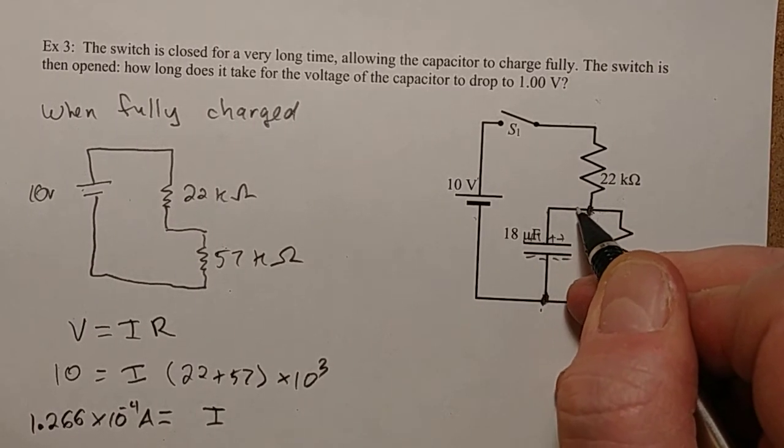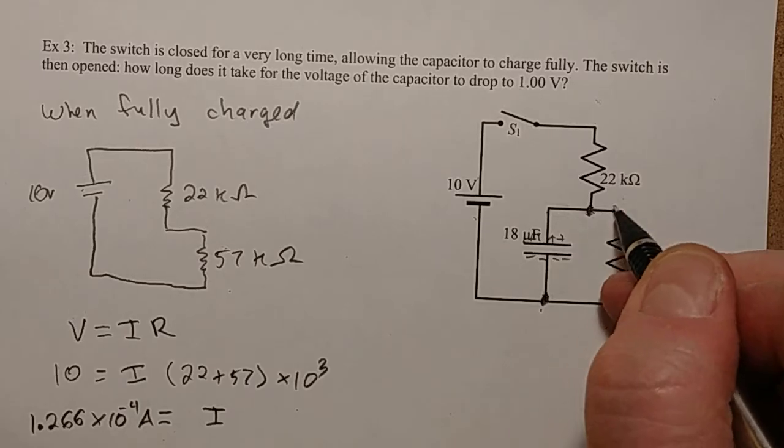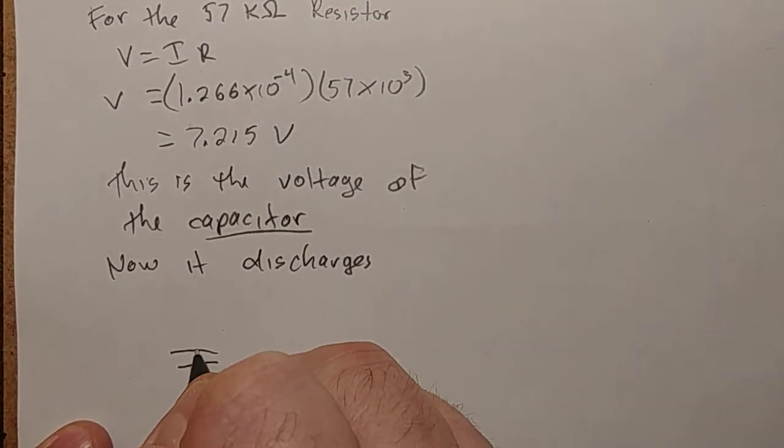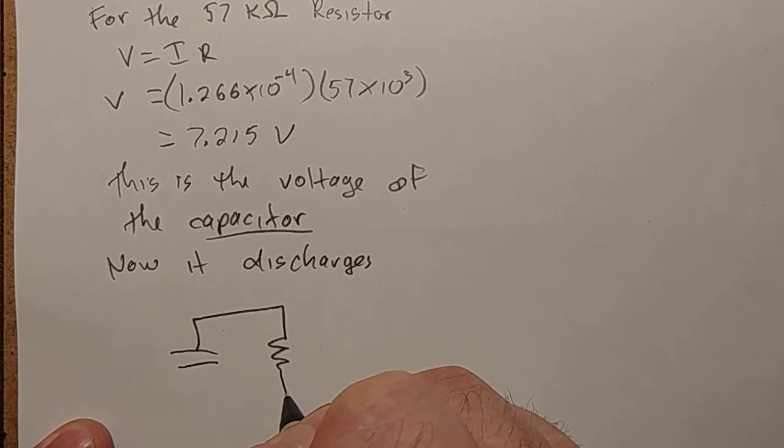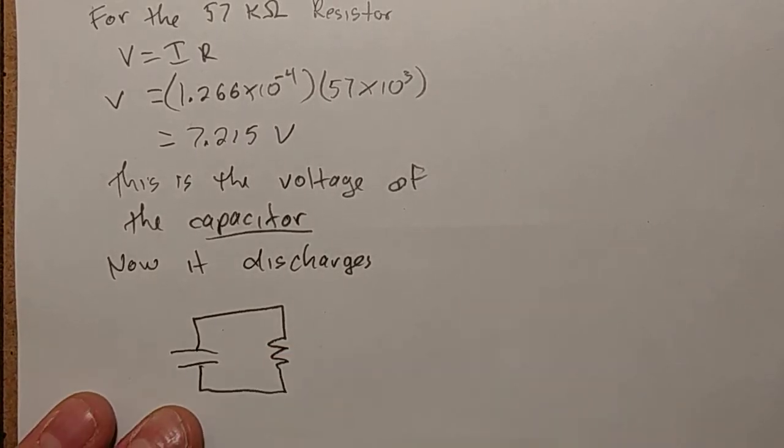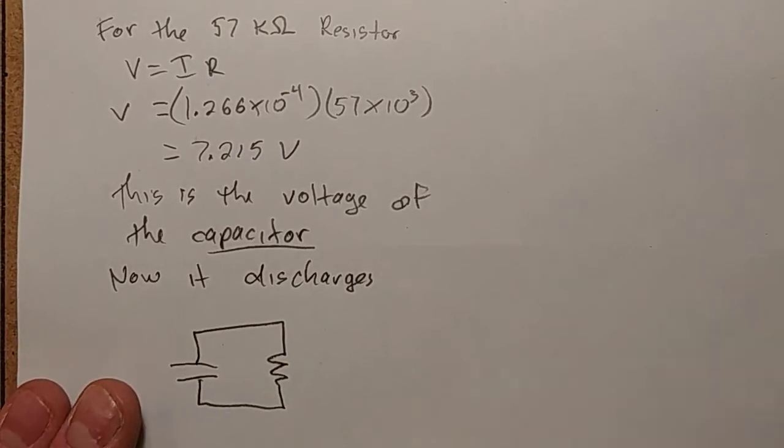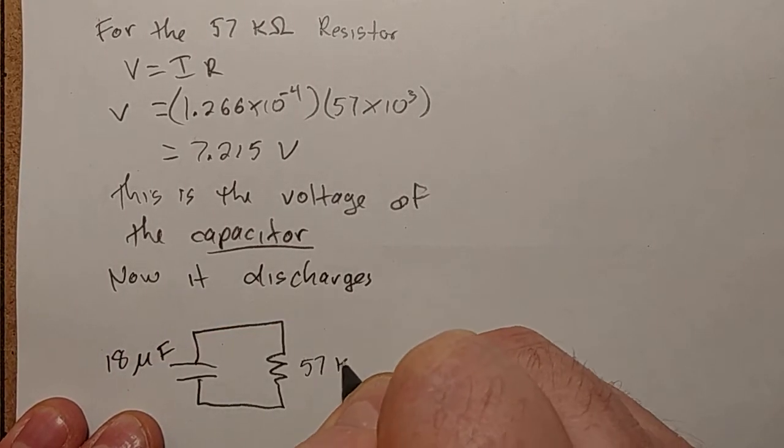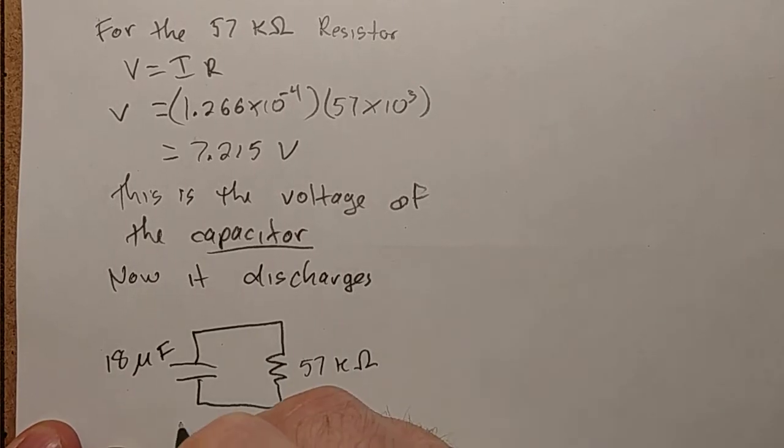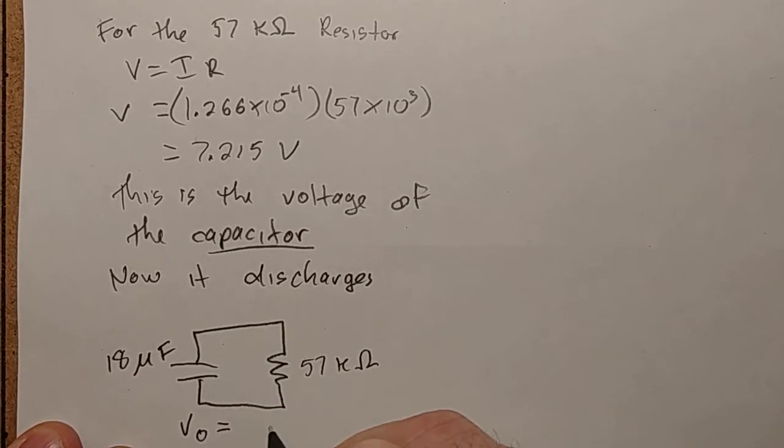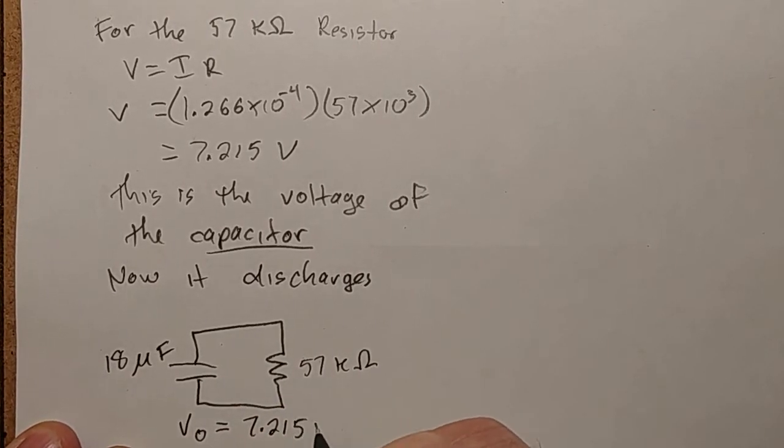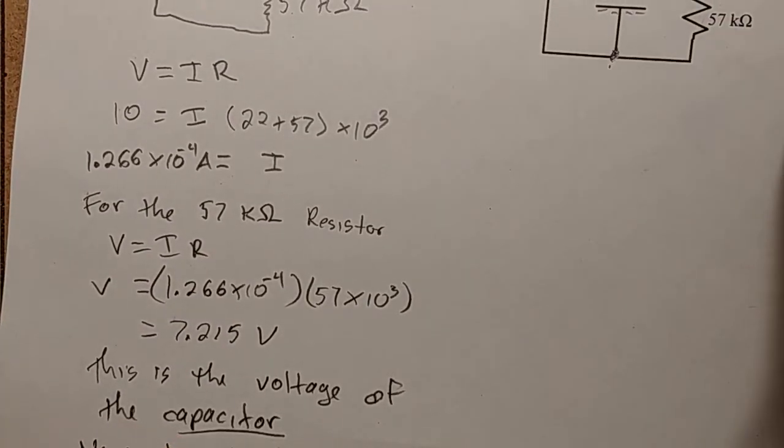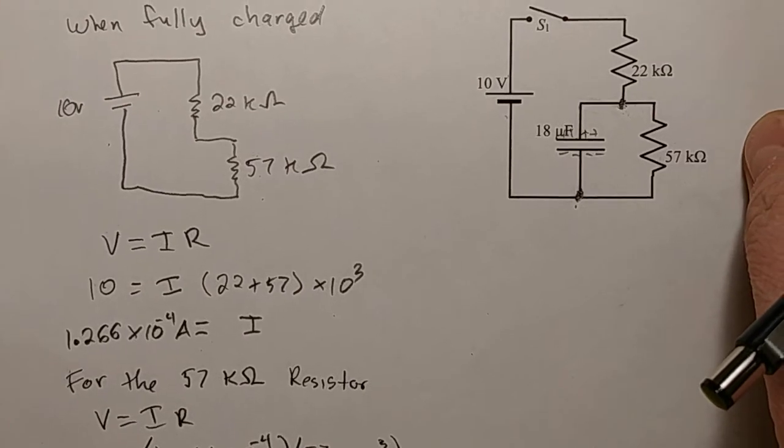What happened to these charges? These charges aren't going to go up there because there's nowhere to go, so they're going to go like this. So now you have this simple circuit: a capacitor and a resistor. That's it. You have this capacitor of 18 microfarads and this resistor of 57 kilo ohms with a V0 on the capacitor of 7.215 volts.